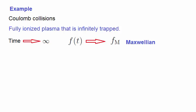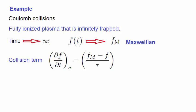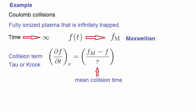A possible collision term is given by this, where tau is the average or mean time between collisions. This is known as the tau or crook collision term. If we integrate this term, we have a solution of this form.